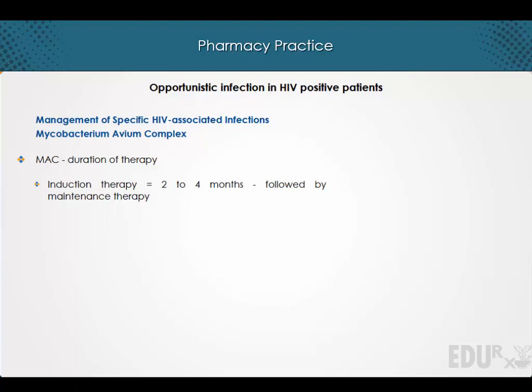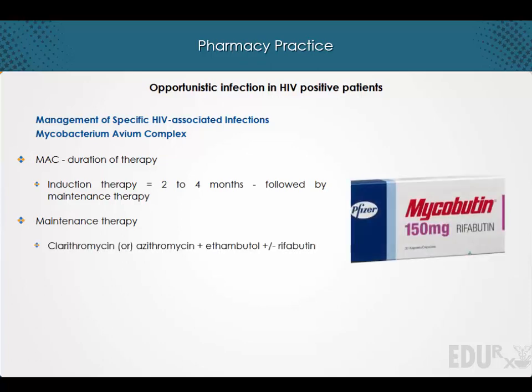Maintenance therapy consisting of either clarithromycin or azithromycin plus ethambutol, with or without rifabutin, is continued for life unless a patient has sustained immune recovery on combination antiretroviral therapy.